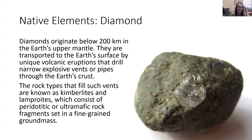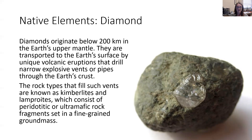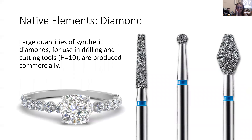Moving away from metals, let's talk about diamonds. Diamonds are made of just carbon — nothing else. They originate below 200 kilometers in depth and are transported to Earth's surface by unique volcanic eruptions that drill narrow, explosive vents or pipes through the crust. They're formed in the upper mantle and then shot out to Earth's surface. The rock types filling these vents are known as kimberlites and lamproites, which consist of ultra-mafic rocks formed in the mantle with very little silica. We use diamonds in jewelry, but we actually use far more diamonds in industrial processes because of their hardness — a 10 on the Mohs hardness scale — making excellent drill bits and abrasives.